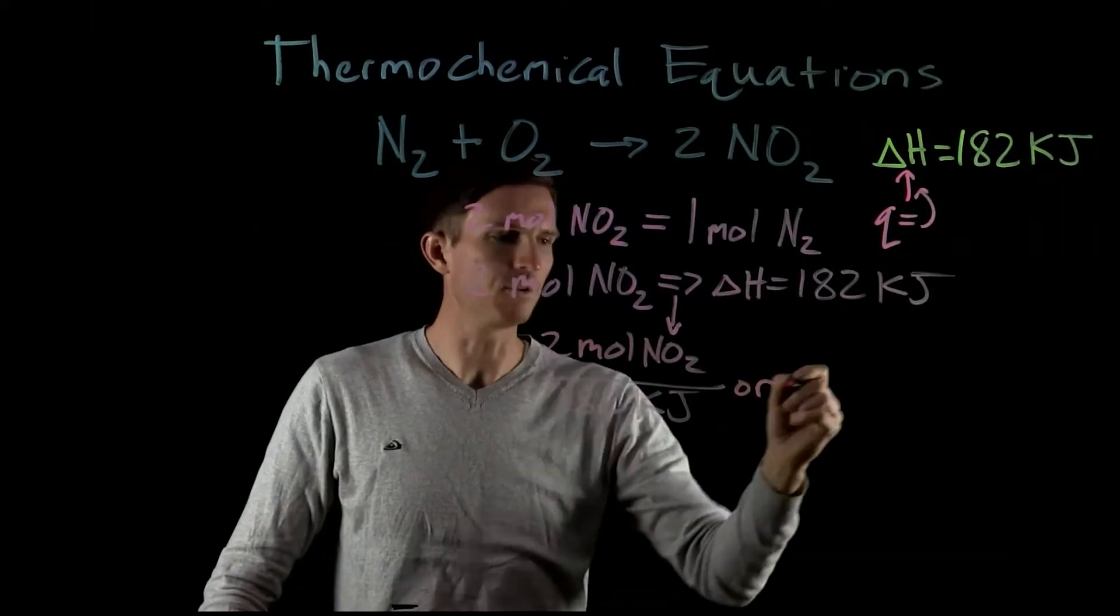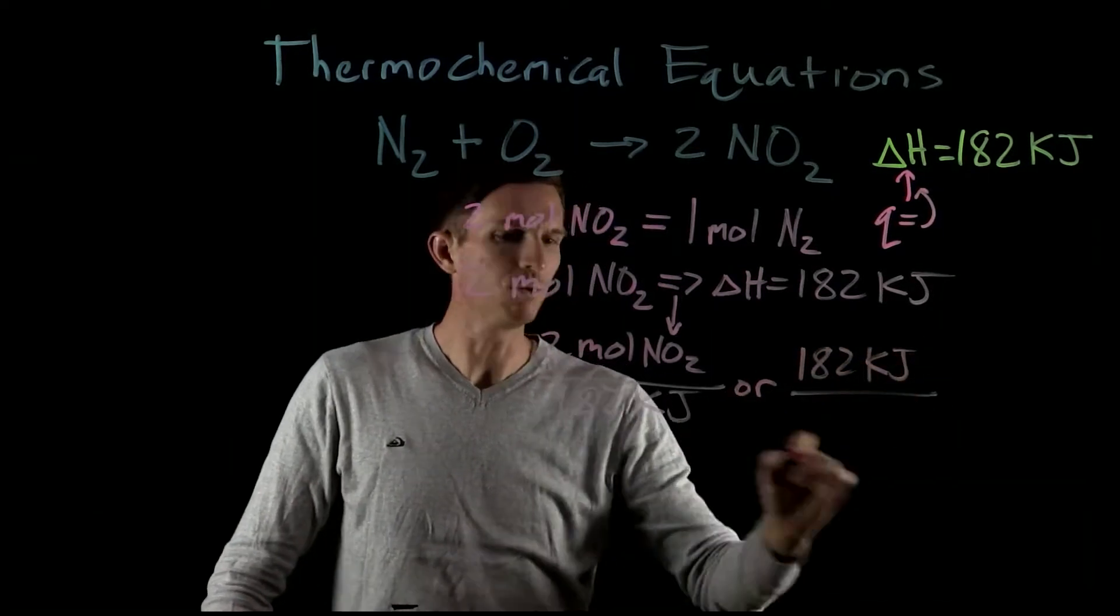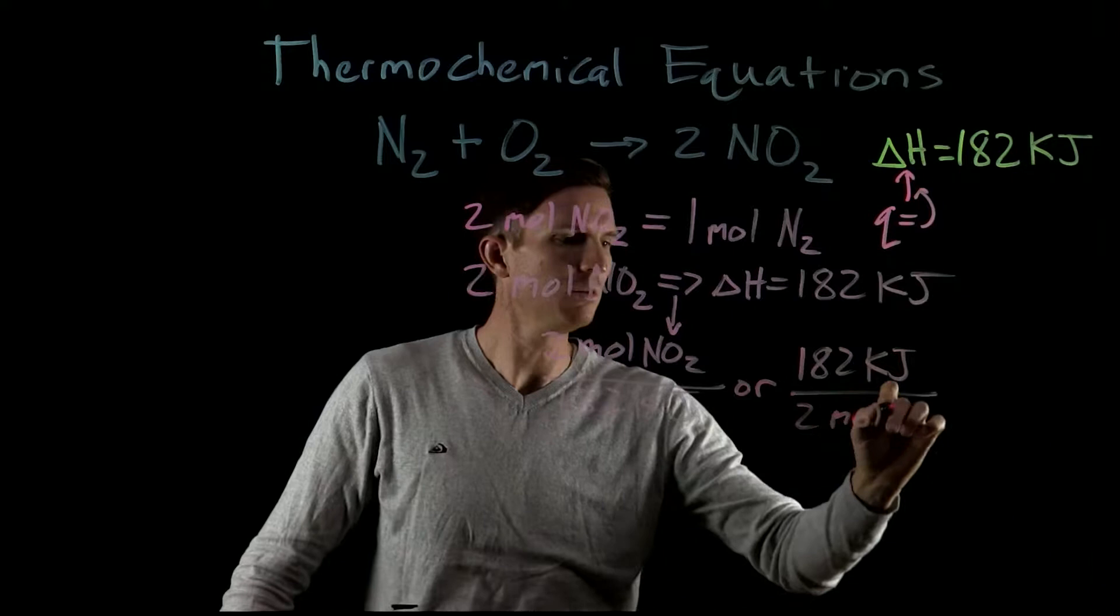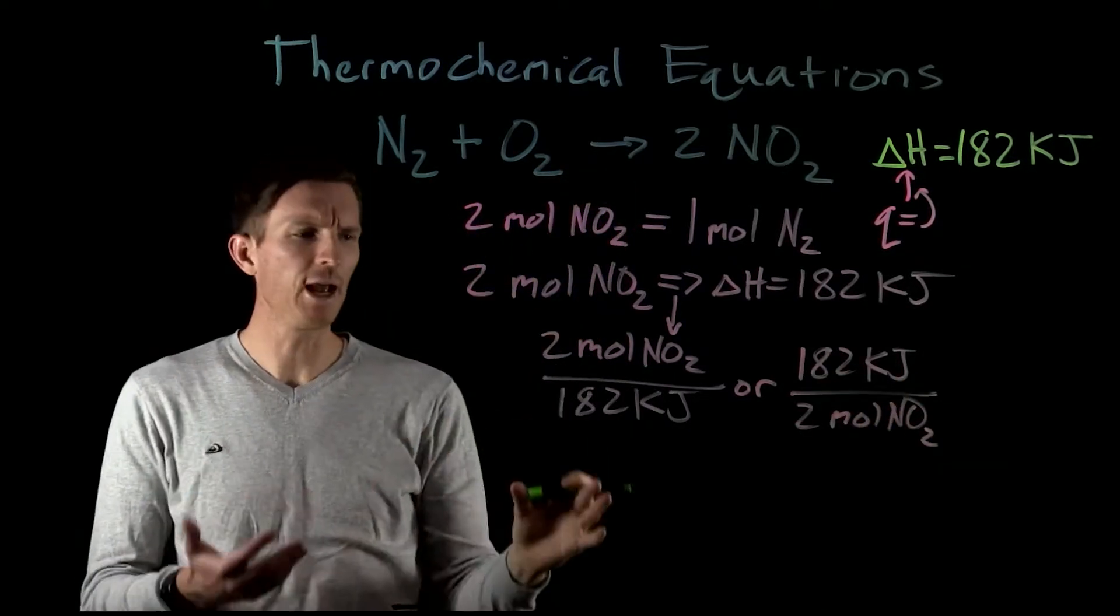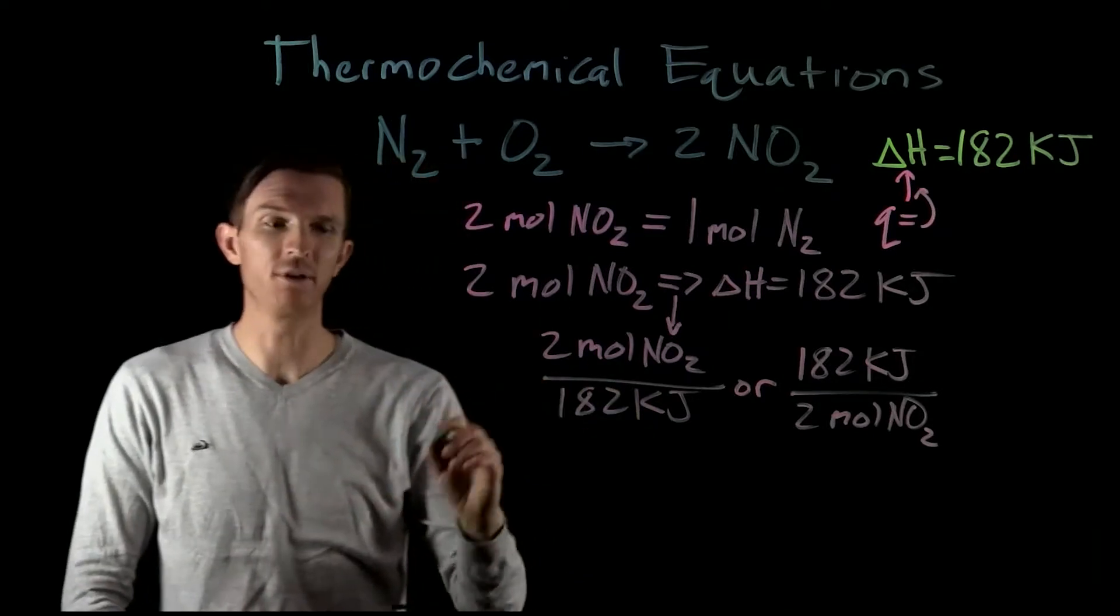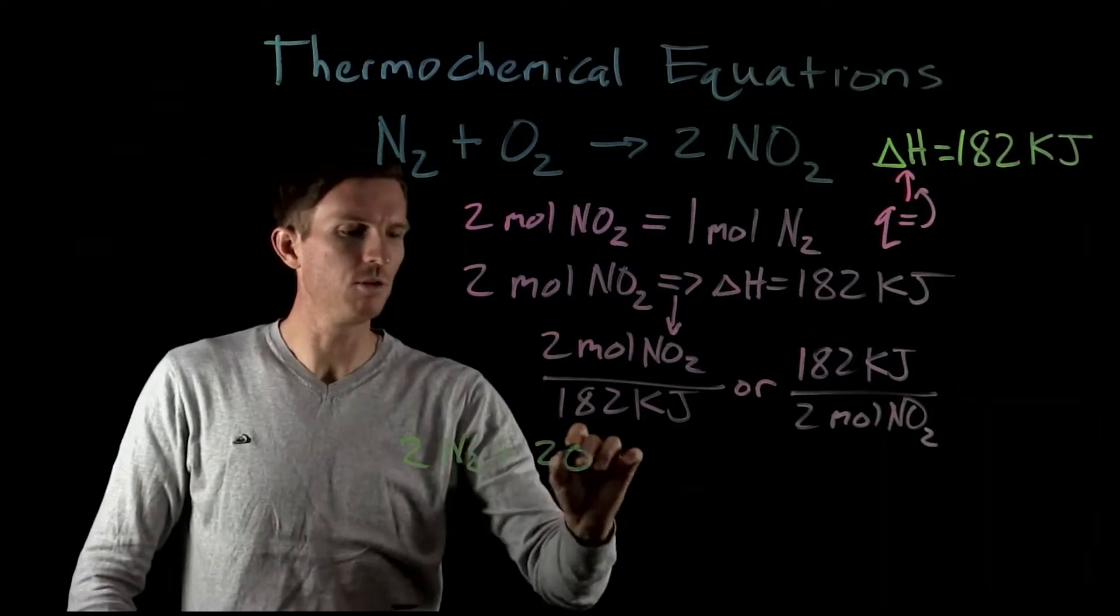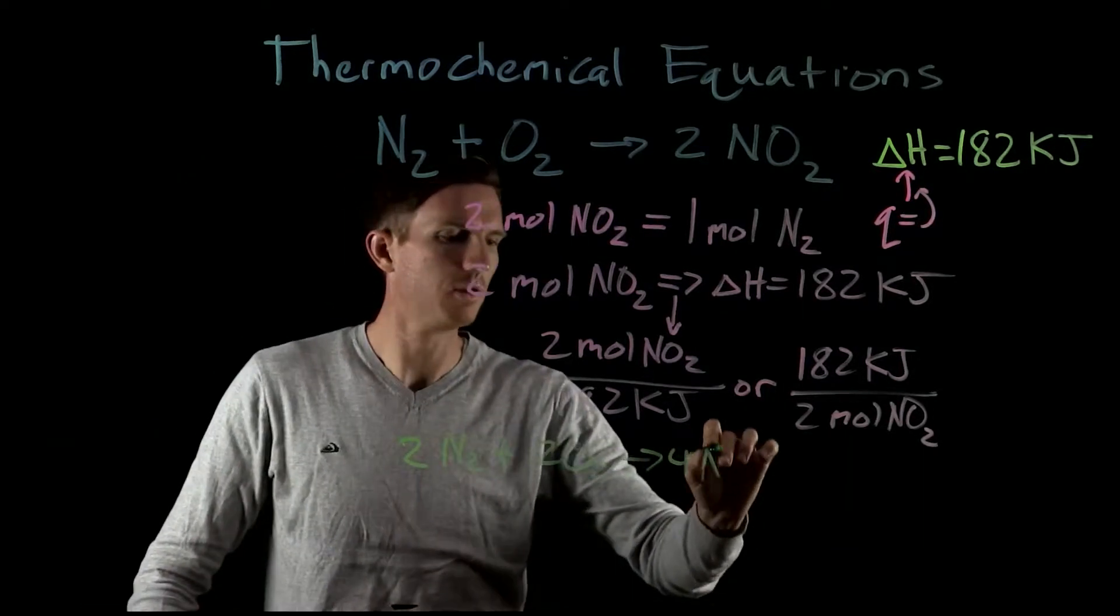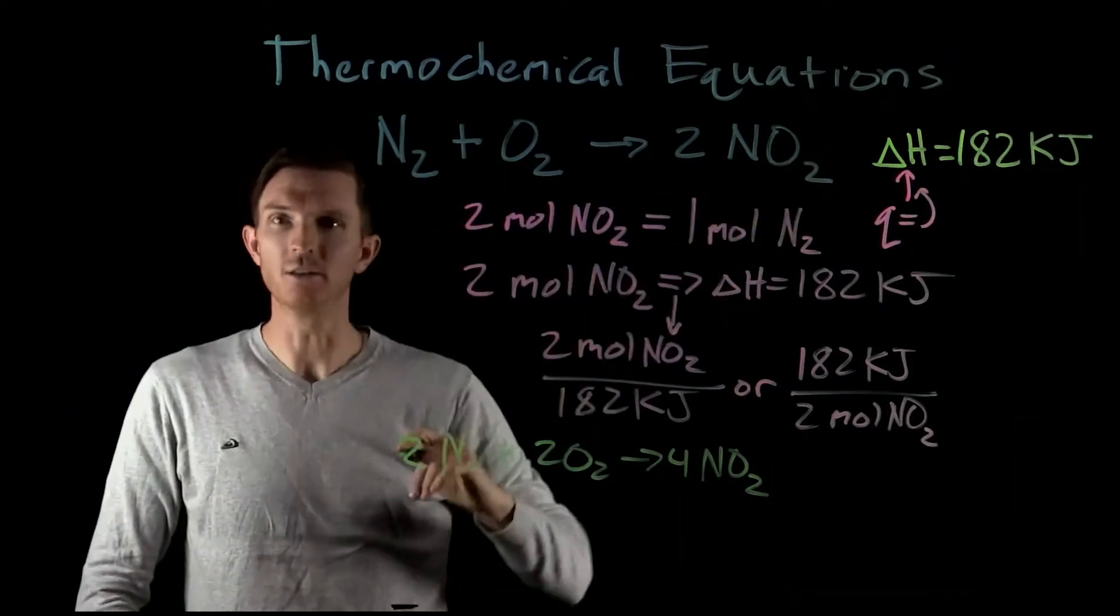So we can say, two moles of NO2 would equate to 182 kilojoules for our enthalpy change. Or, we could also write the inverse, 182 kilojoules equates to two moles of NO2. Now what happens if we change the amounts that we react? So if I were to have, for example, 2N2 and 2O2 going to 4NO2, well now what would that do to my change in enthalpy?